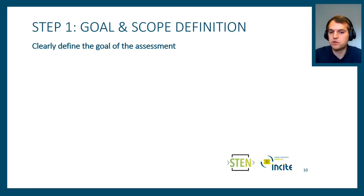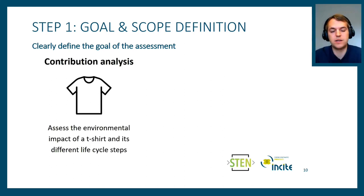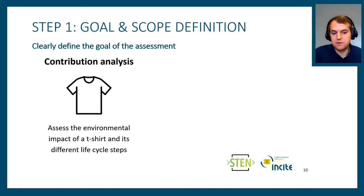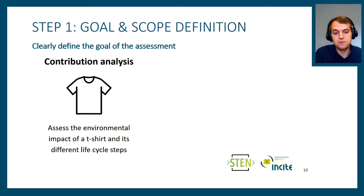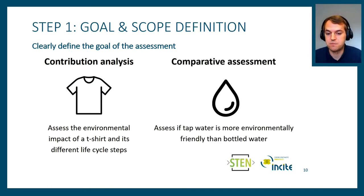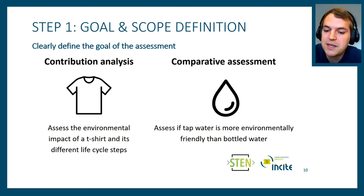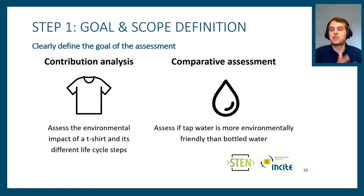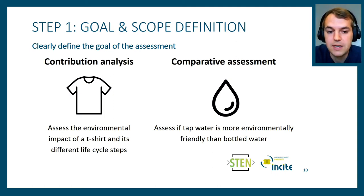In the goal and scope definition, the first step is to define why you are doing your assessment. For example, you might want to assess the sustainability of a t-shirt and know where in its life cycle the highest environmental impact occurs — during fiber production, manufacturing, use, or disposal. Another possibility is a comparative assessment, such as comparing tap water versus bottled water, or comparing a traditional chemical process against an enzymatic process.